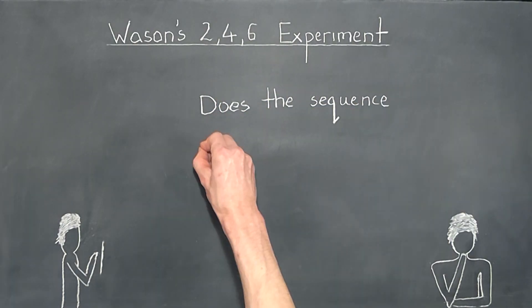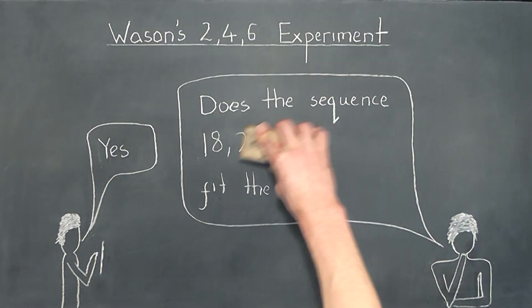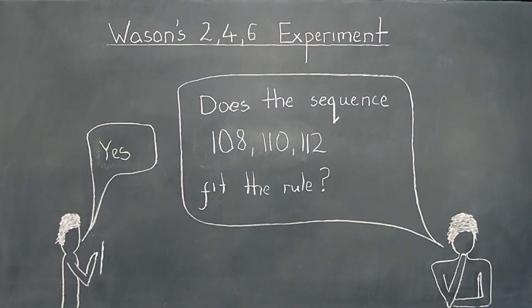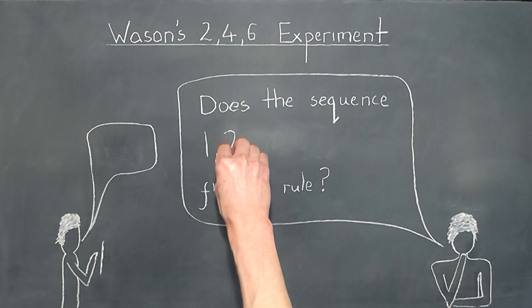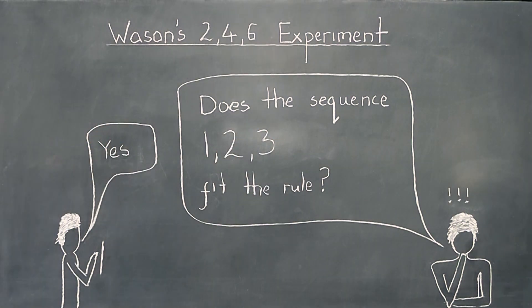First of all, Stan would certainly have taken advantage of being allowed to propose as many sequences as he likes before guessing the rule. Like most of us, Stan would have spotted the obvious pattern of adding two each time, and would probably propose a few sequences to see if this result holds. However, unlike most of us, after this Stan would use his skeptical mind to ask about sequences which he thought wouldn't fit the rule he had in mind.